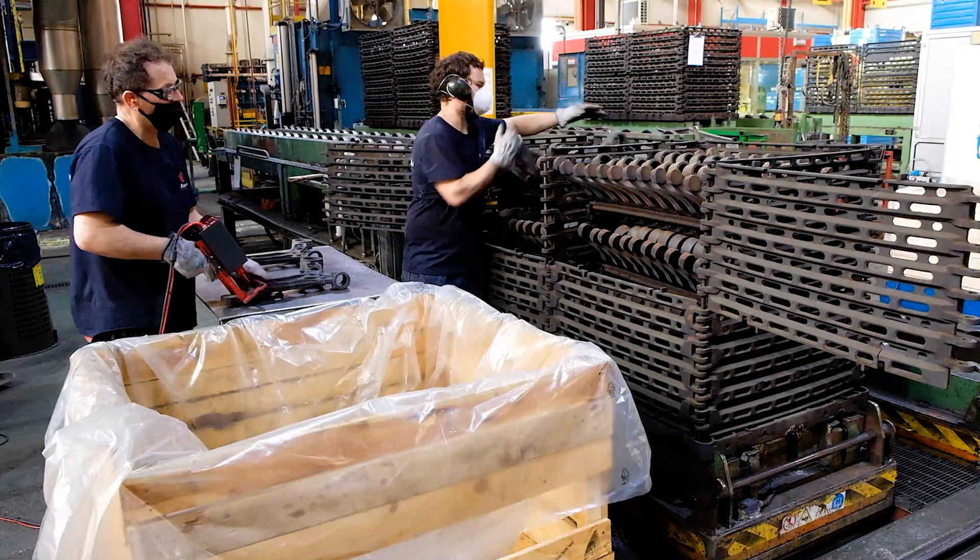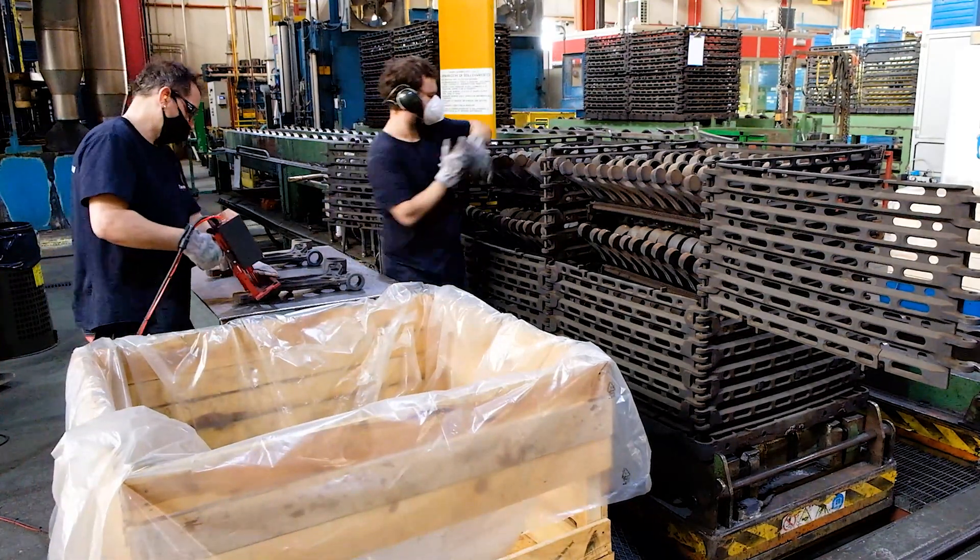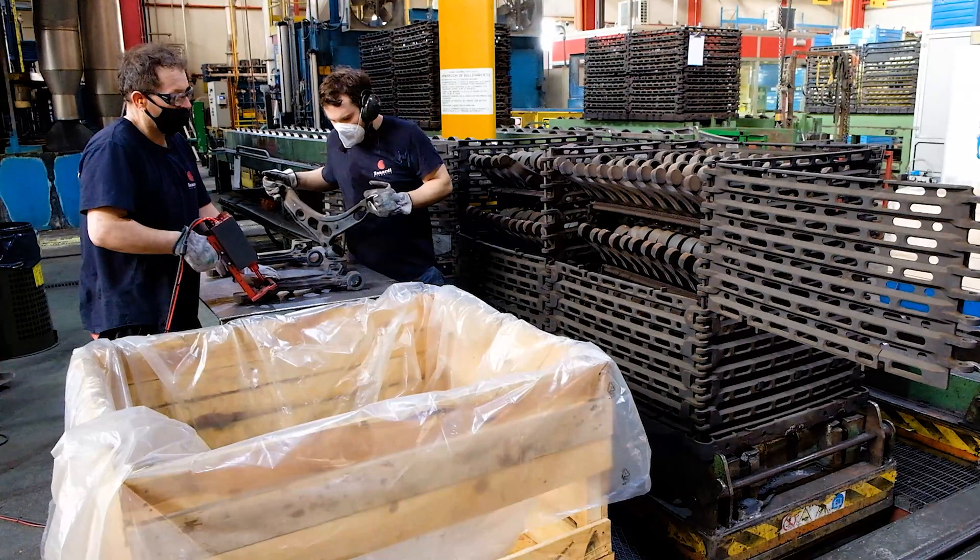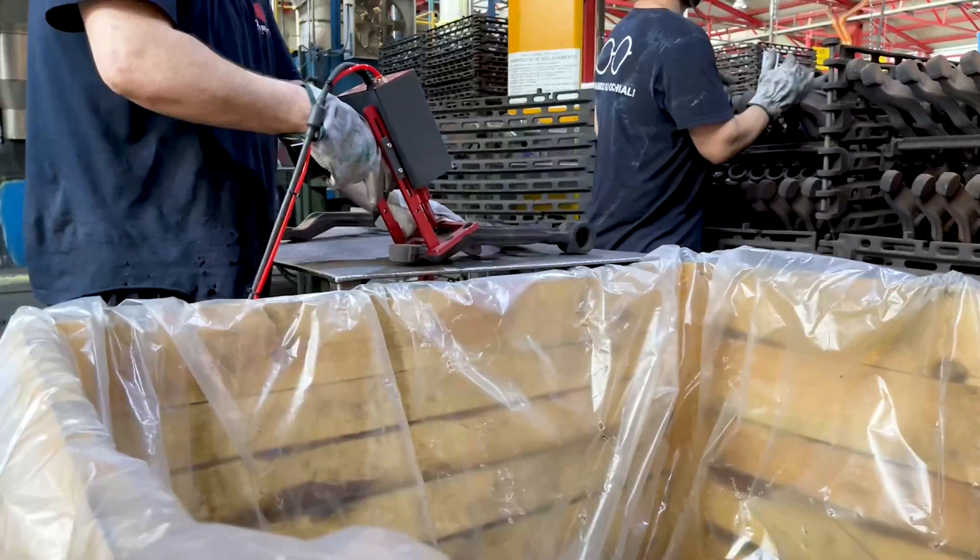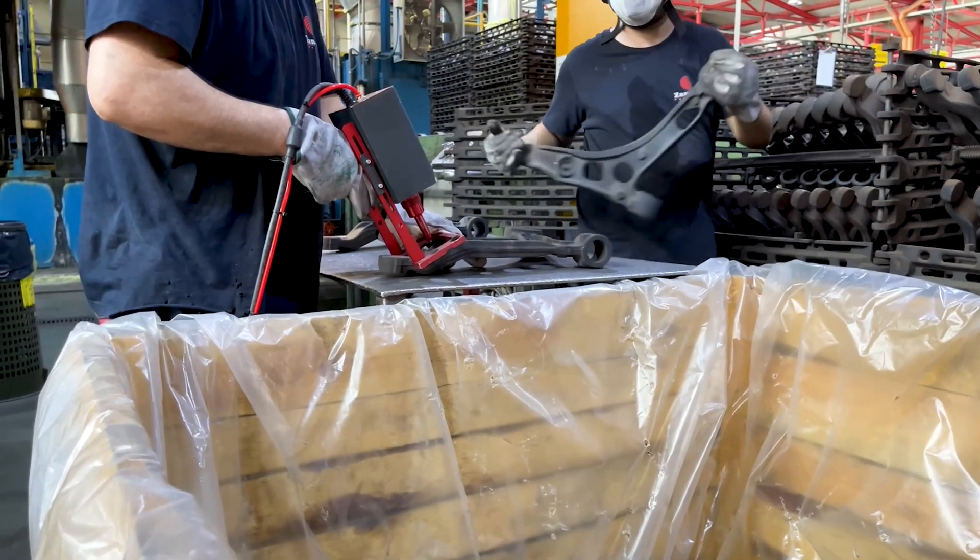Once the cast iron workpieces are extracted from the washing system, the operators carry out checks and, if requested by the customer, mark an additional serial number with a marker.